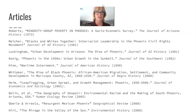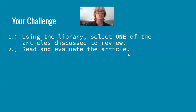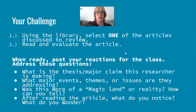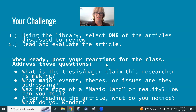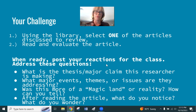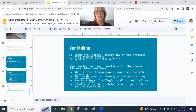Those are all the articles with their citations. Here's your challenge: using the library, select one of those articles. Don't Google them — you probably won't get access to the full article. Use the library to find it. Then read and evaluate it. When ready, post: What is the thesis or major claim this researcher is making? What major events, themes, or issues are they addressing? Is this more of a magic land or a reality analysis? And after reading, what do you notice and what do you wonder?